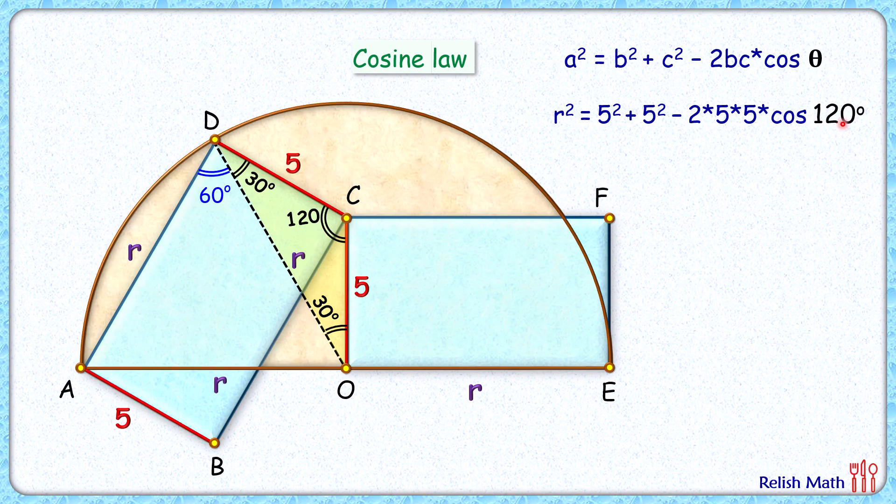So we'll get r² is 50 minus 50 times of minus half or r² is 50 plus 25 or 75, and r that will be 5√3 centimeter and that's our answer.